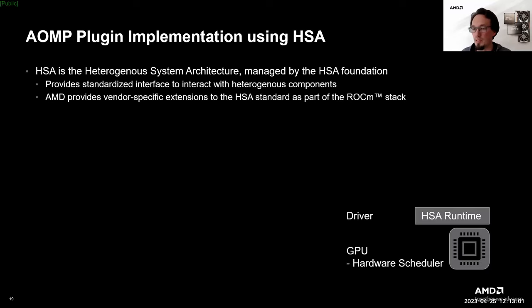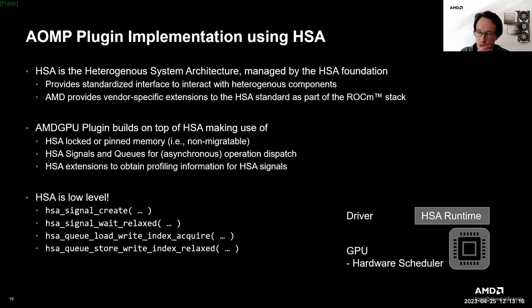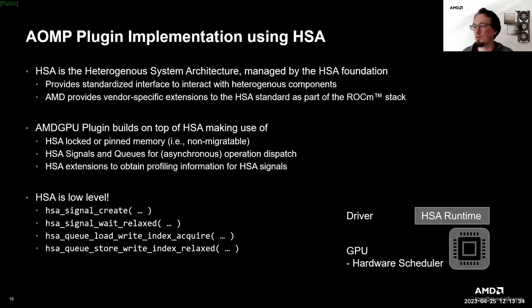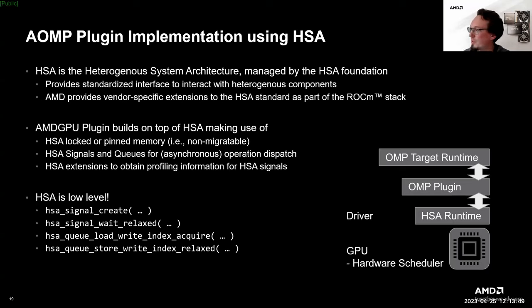The AMD GPU plugin is built on top of the HSA runtime. It makes use of HSA locked or pinned memory for higher performance data transfers between host and device, uses HSA signals and queues to launch kernels and data transfers, and manages dependencies between these signals to handle asynchronous events. For most OpenMP OMPT profiling support, it uses HSA profiling extensions to read timings for specific signals and reports them to the OMPT client. Note that HSA is pretty low level and should be used with some caution — it is suited to implement a runtime system but probably less well suited for higher-level application logic.